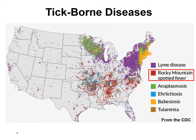Rocky Mountain Spotted Fever does occur in Utah, but there aren't many cases because Utah is very dry and doesn't have many ticks. There are far more cases in the southern states and the Midwest, where there are more ticks. The disease got its name because it was first discovered in the Rocky Mountains, even though it's actually not as common there today — but the name stuck.